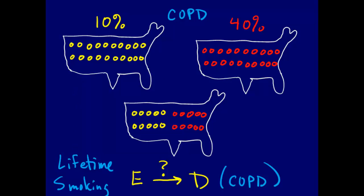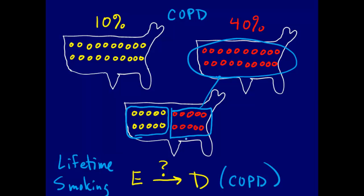We actually never have data like this. We never have the situation where everyone is a non-smoker, and we never have the situation where everyone is a lifetime smoker — and we certainly don't have both at the same time. What our data actually look like: we have some individuals who are lifetime smokers and some who are never smokers, and we use these groups to represent what would happen in the population under each scenario.